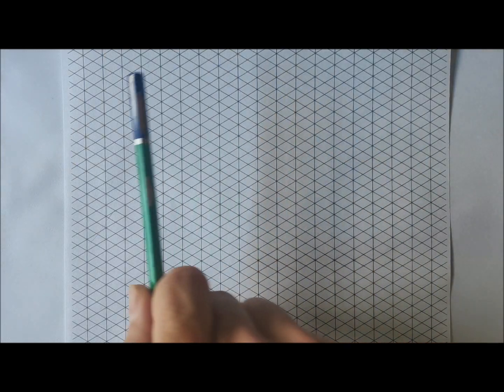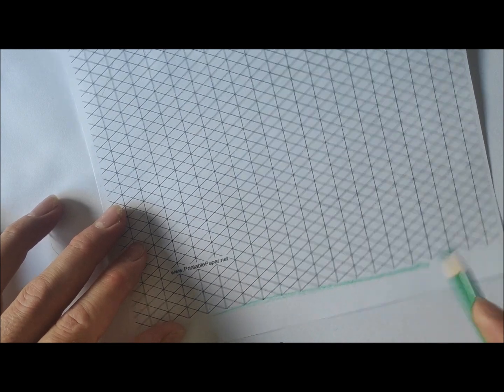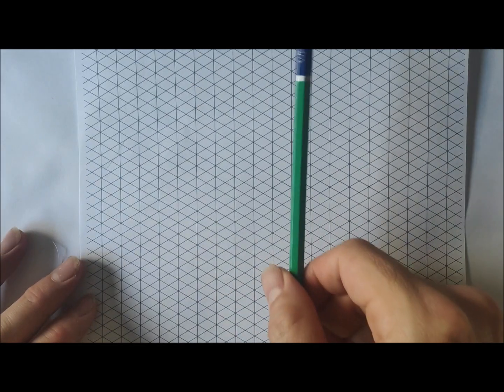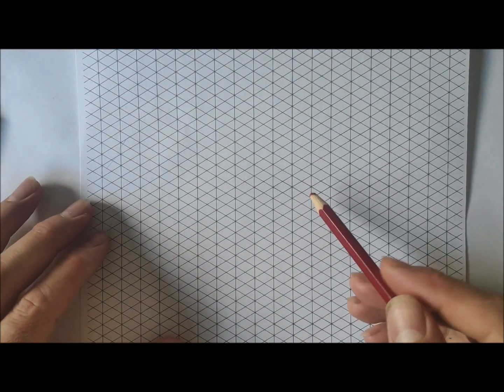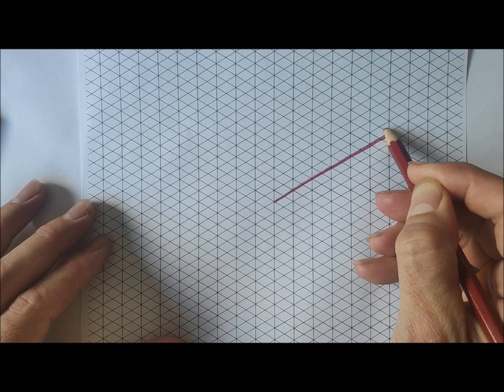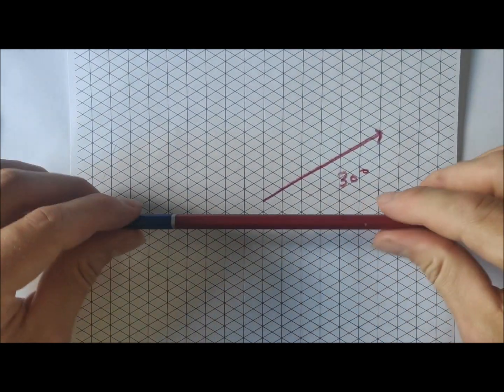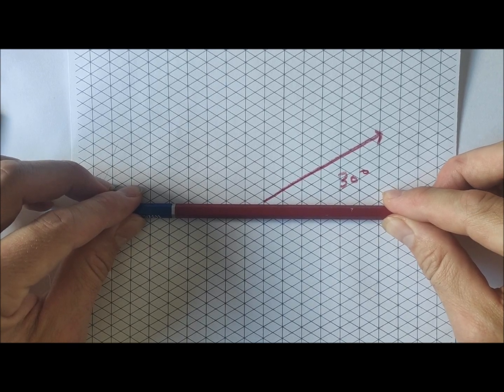And the difference with isometric grid paper to normal grid paper is you'll see that we've got lines going up and down, or at 90 degrees to basically like a horizon line or the bottom of the paper there. But you've also got two other lines on the page, and one line is going off in this direction, and it's going off at 30 degrees.